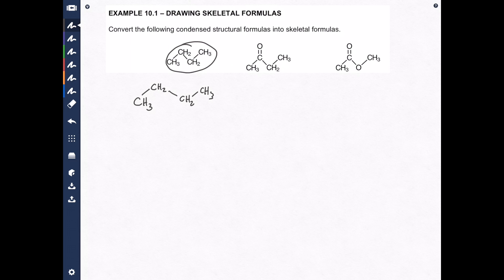Now, the skeletal formula has the least amount of detail, but it takes a lot of extraneous information away. That information is important — you need to know it's there, but you don't need to see it. We need to take this drawing and make it look a whole lot neater and easier to read. In a skeletal formula, carbons and hydrogens are never shown, so lots of carbons and hydrogens that appear in this drawing will not be shown.